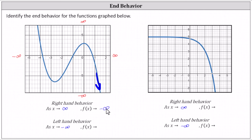For the left-hand behavior, x approaches negative infinity, or we can think of moving left along the function. As we move left, notice the graph goes up indefinitely, which indicates the y values increase without bound and approach positive infinity. The left-hand behavior is: as x approaches negative infinity, f of x approaches positive infinity.